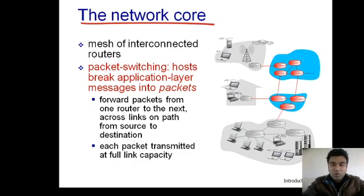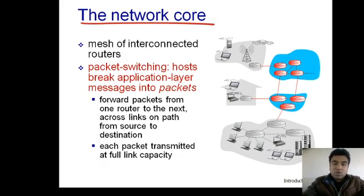Welcome to this course on computer networks. Today we start discussing the network core, which can be operated with the help of two switching types. The first is circuit switching, used in PSTN — the Public Switched Telephone Network — which is one of the biggest networks laid down by engineers for telecommunication and is an example of a circuit switch network.